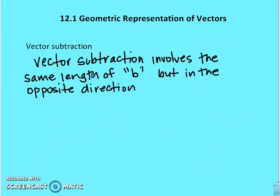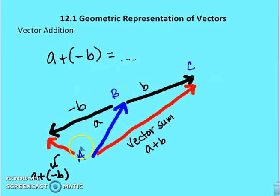So vector subtraction involves the same length of B, but in the opposite direction. So let's take our example here. I had A plus B. My original vector sum was A plus B. But now B in this same example is going to be in the opposite direction, but with the same magnitude.